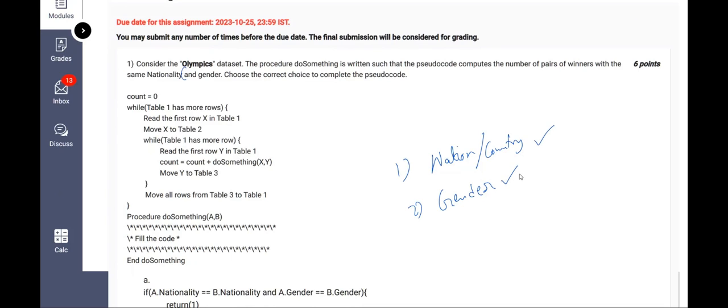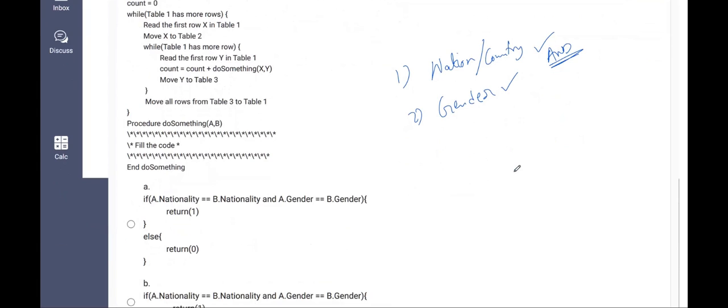Remember, it is and gender but not or gender. Therefore, there must be an end operator in between both of them. So this is first interpretation or the understanding that we need to develop. Let us see what we should place. Count is zero while table one has more rows. Count is equal to count plus do something x comma y. So this is what is empty here. We will have to fill that out.